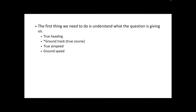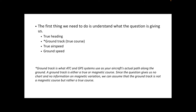The first thing we need to understand is what the question is giving us. They gave us a true heading, a ground track — which is going to be a true course — and a true airspeed and ground speed. Ground track is what ATC and GPS systems use as the aircraft's actual path along the ground. Since the question gives us no magnetic variation information, we can assume the ground track is a true course, not a magnetic course. Winds are assumed true on the FAA written unless stated otherwise.